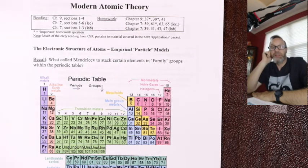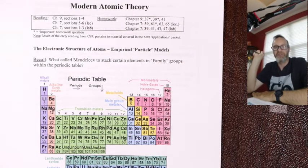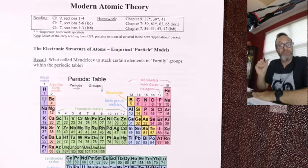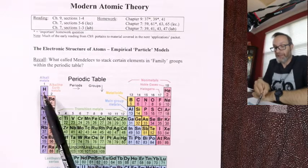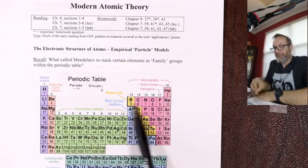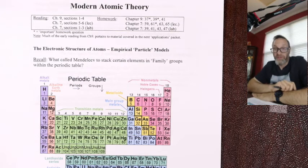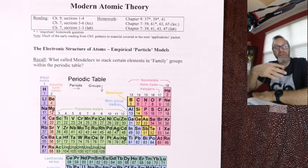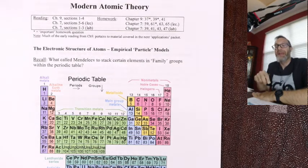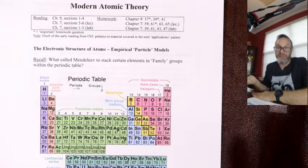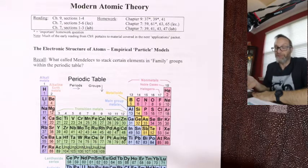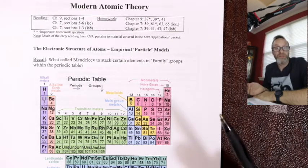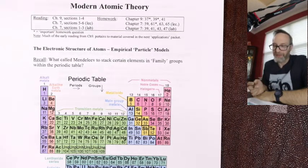Mendeleev did exactly the same thing before the proton was discovered — he arranged his periodic table left to right in order of relative weight, lightest to heaviest. It turns out the number of protons identically matches the mass of an atom. So if you look at the masses and the atomic numbers, they're in the same order.